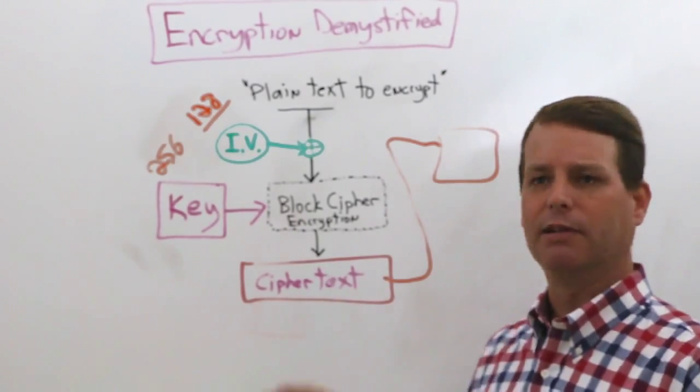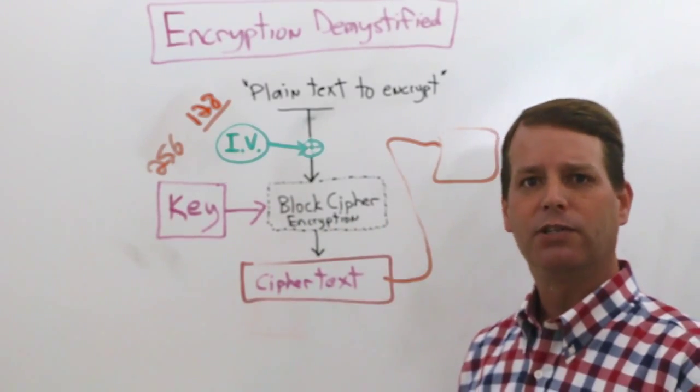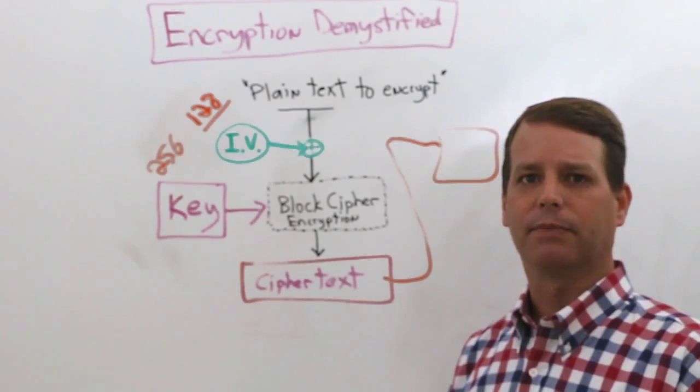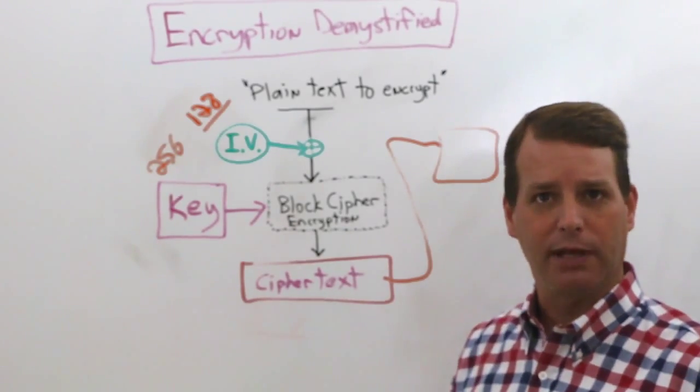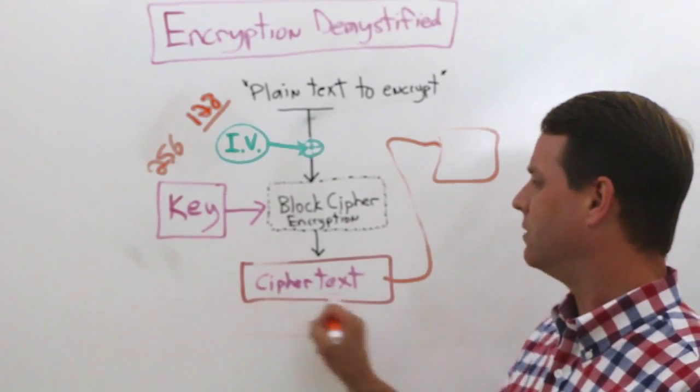Then I'm going to create my block cipher. Now this part here is going to depend on what encryption scheme that you're using. So that will depend on whether or not it's AES 256-bit or other things like that. So I have a crypto engine here creating myself a ciphertext.